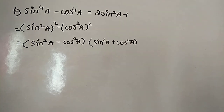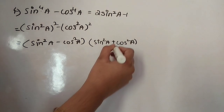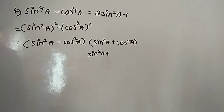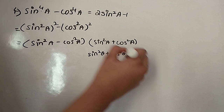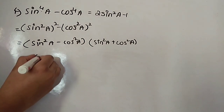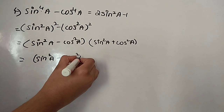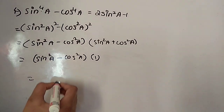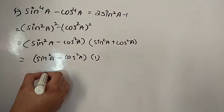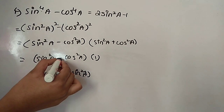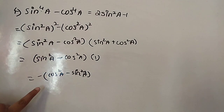Using the identity a squared minus b squared equals (a minus b)(a plus b), we split it as (sin squared a minus cos squared a) times (sin squared a plus cos squared a). Now sin squared a plus cos squared a equals 1 by the first identity, so this becomes just sin squared a minus cos squared a.